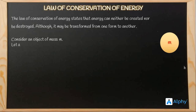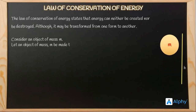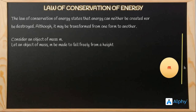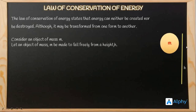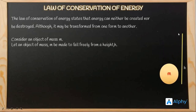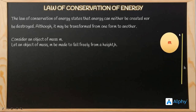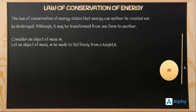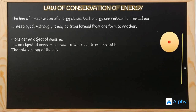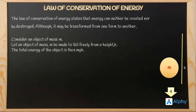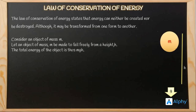Consider an object of mass m. Let an object of mass m be made to fall freely from a height h. Here you can see that the object of mass m is falling from a height of h. At the initial start point, the potential energy is mgh and the kinetic energy is zero, because its velocity is zero.